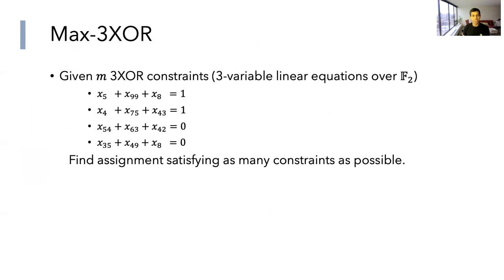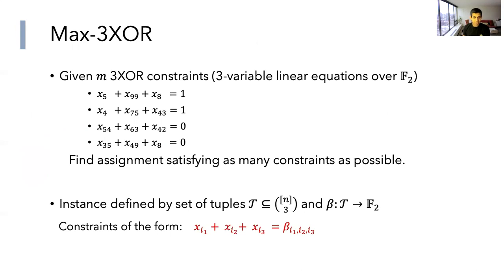The problem we'll consider is 3XOR, or the maximization version of 3XOR. You are given m constraints which are linear equations over F2 in Boolean variables. The total number of variables is n, total number of equations is m, and your goal is to find an assignment satisfying as many equations as possible. An instance is described by a collection of three-tuples (the left-hand sides) and a function beta giving each equation a right-hand side in F2.